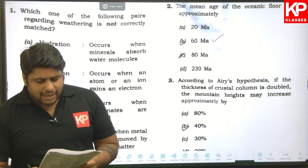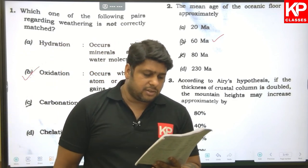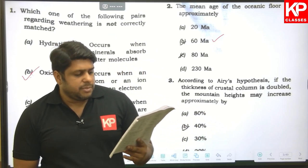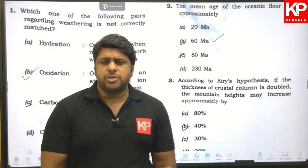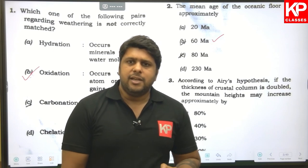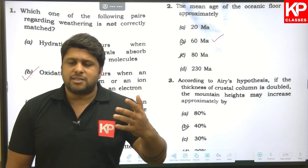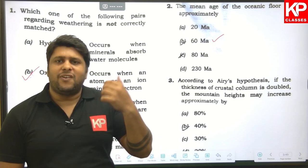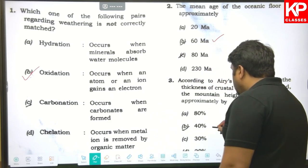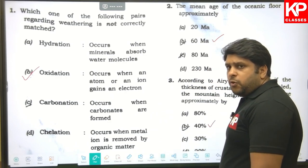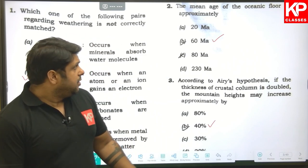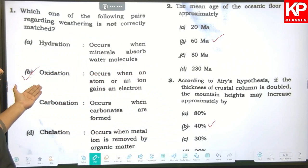Question three: according to Airy's hypothesis, if the thickness of the crustal column is doubled, the mountain heights may increase approximately by what percentage? This is a simple calculation — take a column, calculate it, then increase its thickness by two, find the ratio, then find the percentage. The answer is 40%, so option B is correct. So the first three questions all have option B as the answer.